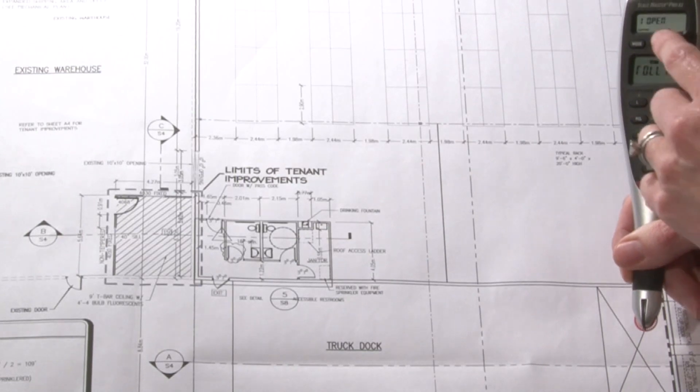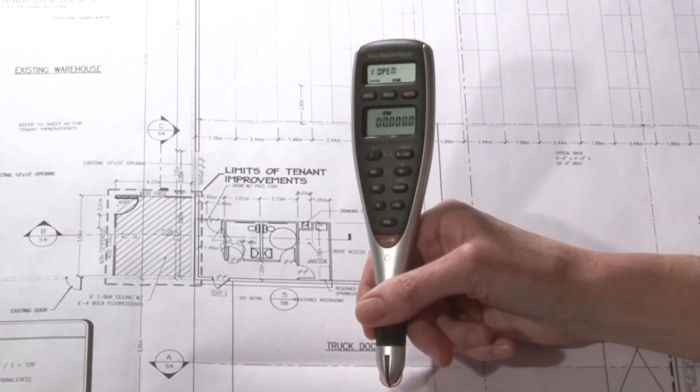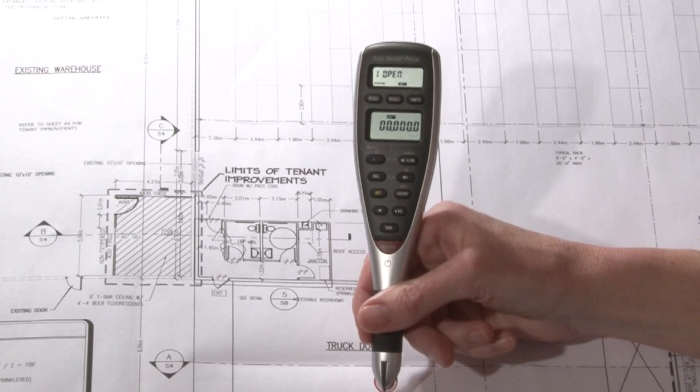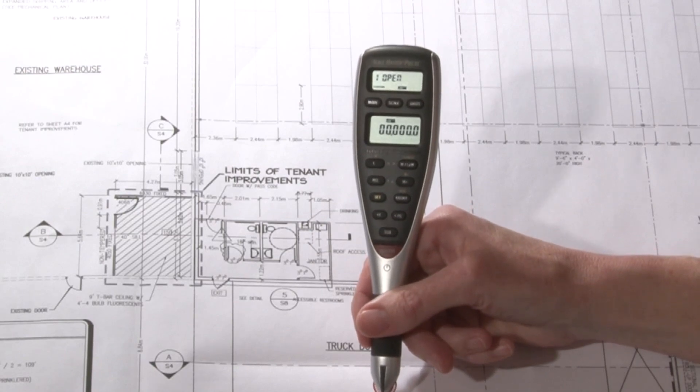Press the scale button. Now it's prompting me to enter the numerical value for that length, so we want to enter 26.2.